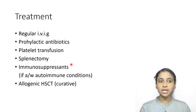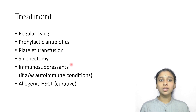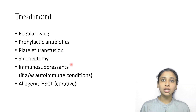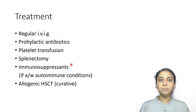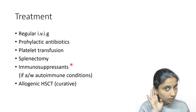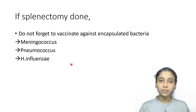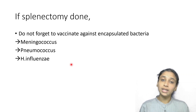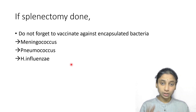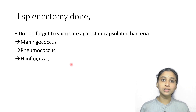For treatment: we give regular intravenous immunoglobulins and prophylactic antibiotics because the person is prone to recurrent infections. For severe thrombocytopenia, we infuse platelets. Splenectomy is done if there is too much destruction of hematopoietic cells — and before splenectomy, we must vaccinate against the three encapsulated organisms: meningococcus, pneumococcus, and H. influenzae. For autoimmune conditions, as can occur in null mutations, immunosuppressants are required. The curative treatment is allogeneic hematopoietic stem cell transplantation. Possible infections in this patient include candidal infections, Pneumocystis jirovecii, varicella zoster virus, cytomegalovirus, and molluscum contagiosum.